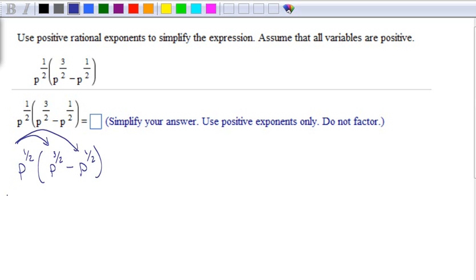When I multiply the inside p to the 1 half times p to the 3 halves, you're going to add exponents.